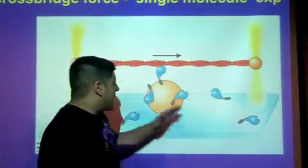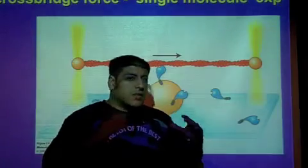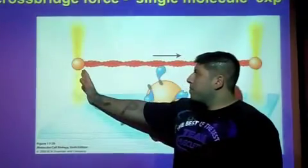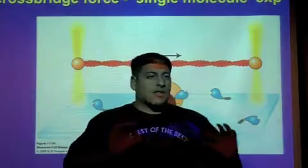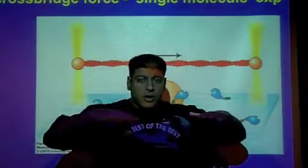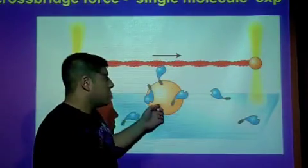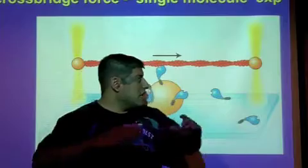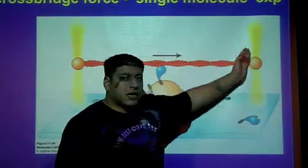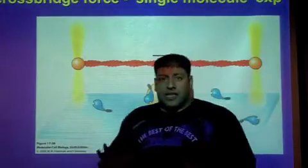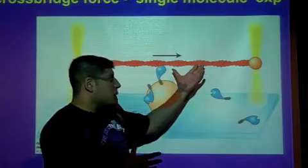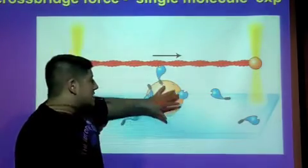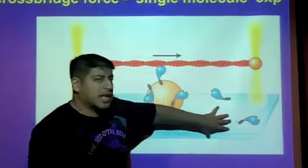What we have is an actin filament, and this actin filament is being held between two latex beads, one on this side and one on this side. These latex beads with the actin filament between them is actually being hovered just above another latex ball, which is covered with myosin heads. The way that this actin filament is being hovered is through lasers. These yellow beams here on either side are the lasers that are holding this actin filament just above this bigger latex bead, which is decorated with myosin. This latex bead with the myosin heads is attached to a glass slide.